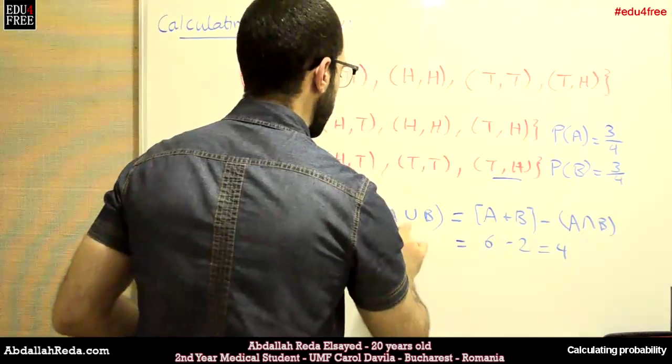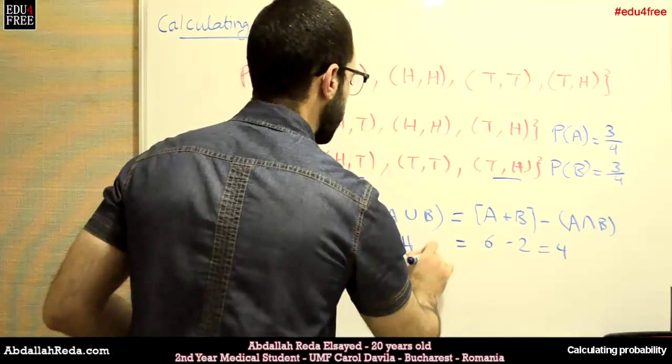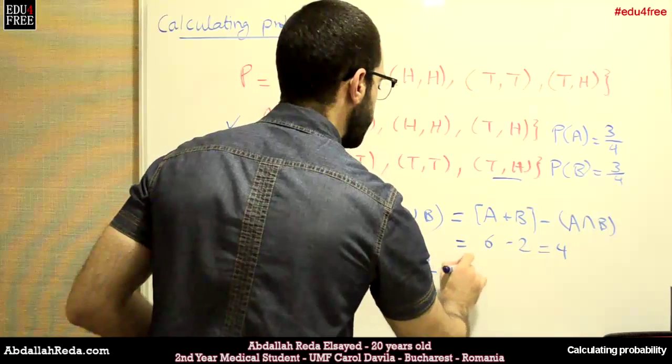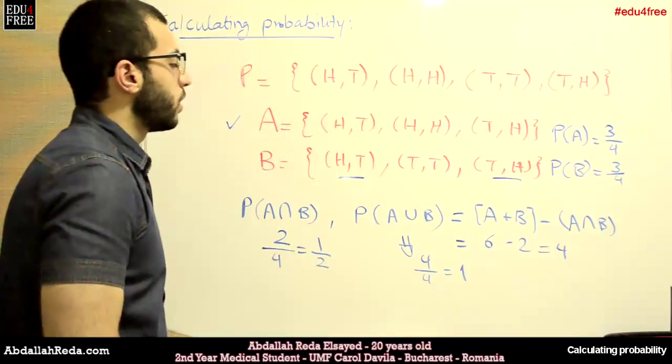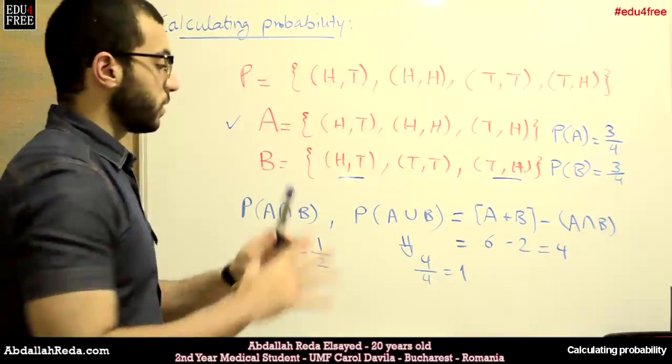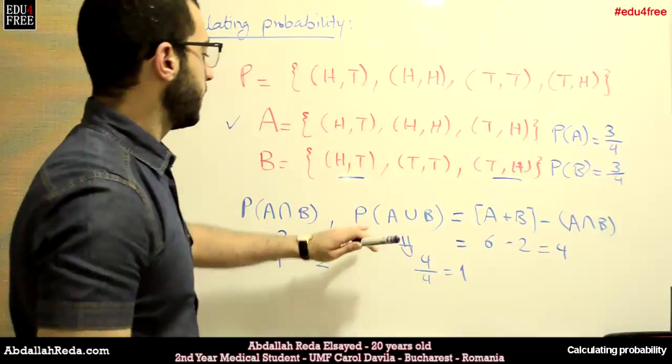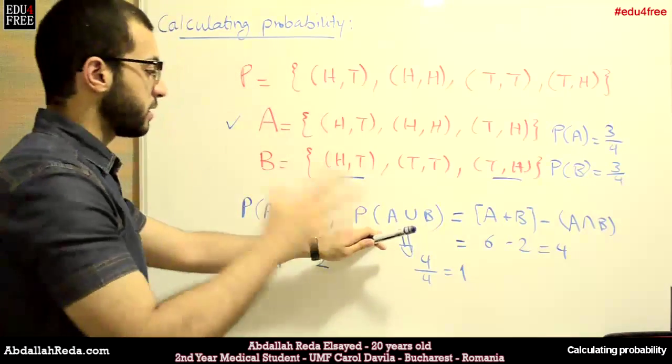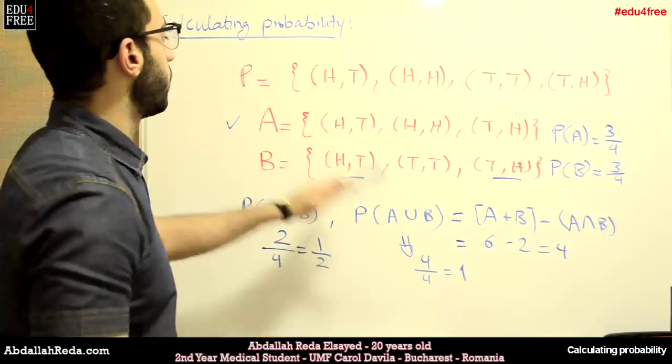So 4. So here we have 4 divided by 4, which is 100%, a 1. So 100% all the time, all the time, this event has the possibility or the probability to occur.